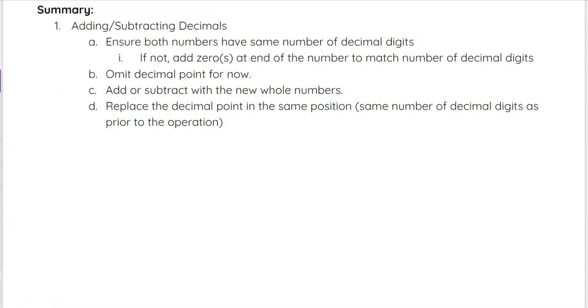So in summary, when we're adding or subtracting decimals, make sure that the numbers that you're adding or subtracting have the same number of decimal digits. If not, then we want to go ahead and add zeros at the end of the number to match the number of decimal digits.